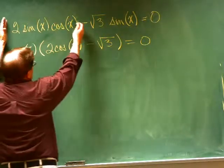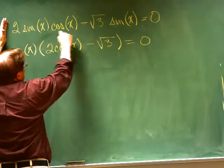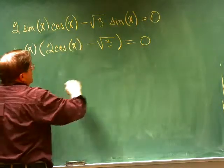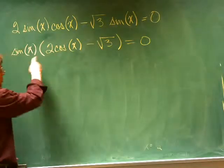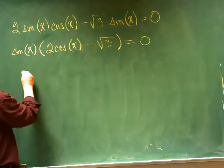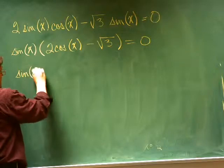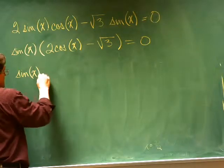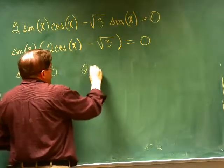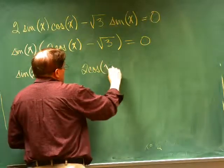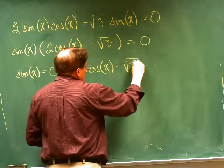The stuff that's left in the first term is two cosines of x, and the stuff that's left in the second term is the square root of 3. At this point, I know that I need to worry about sine of x being equal to 0, and I'm also worrying about two cosines of x minus the square root of 3 being equal to 0.